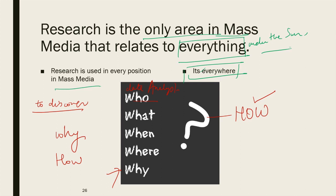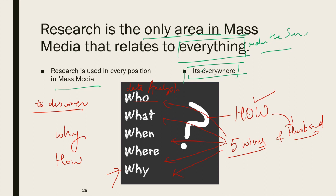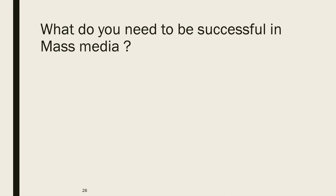Why is research so important in mass media? Because it answers questions like: why do people choose one program over another? How much time do they spend watching it? How has internet affected other media like newspaper, TV, and radio? Why are some advertising campaigns successful while others flop? Always keep in mind: who, why, how, and what. Every time you have these questions popping in your mind, you have raised a question that needs to be investigated and researched. Mass media research deals with the production of programs and the consumption of audiences.